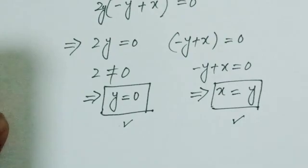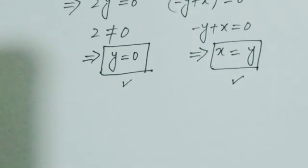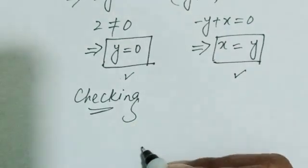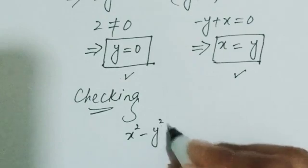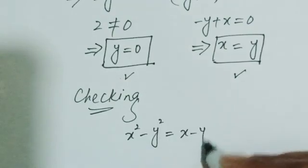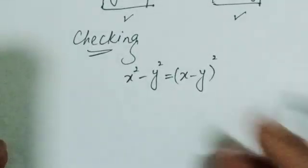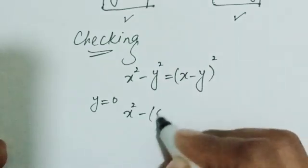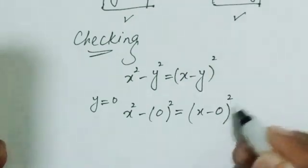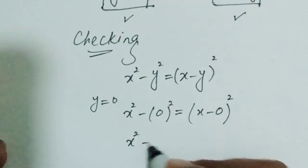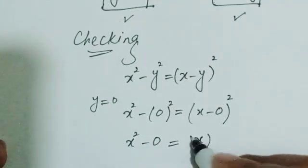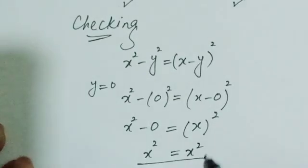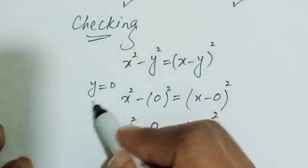Let's check these roots in equation number one: x squared minus y squared equals (x minus y) whole squared. First, checking for y equals zero: x squared minus 0 squared equals (x minus 0) whole squared, which gives x squared equals x squared. This is true, so y equals zero satisfies the equation.